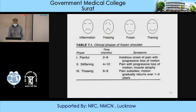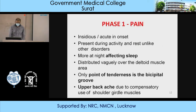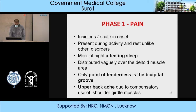In Phase 1, there is insidious onset of pain, worse at night and affecting sleep. It is distributed vaguely over the deltoid muscle area; the only point of tenderness is the bicipital groove. There may be upper backache due to compensatory use of shoulder girdle muscles.